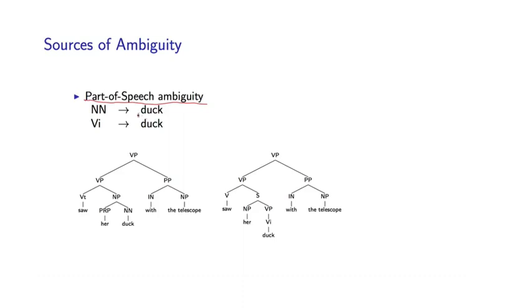So here's one example. The word duck can be a singular noun, but it can also be an intransitive verb. So it's ambiguous for its part of speech.